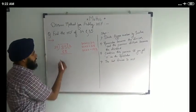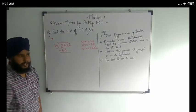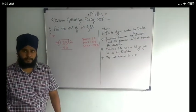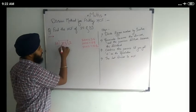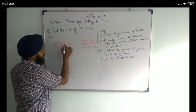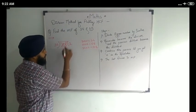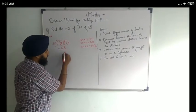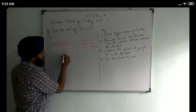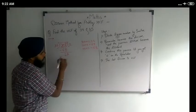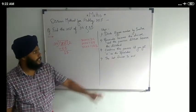Now here we are subtracting. 5 minus 8 is not possible, so we are borrowing a number. It becomes 7 and this becomes 15. So 15 minus 8 is 7. 7 minus 6 is 1. So the remainder is 17.